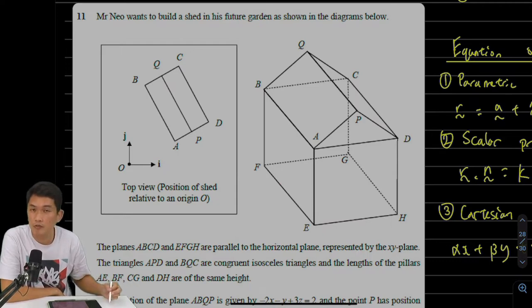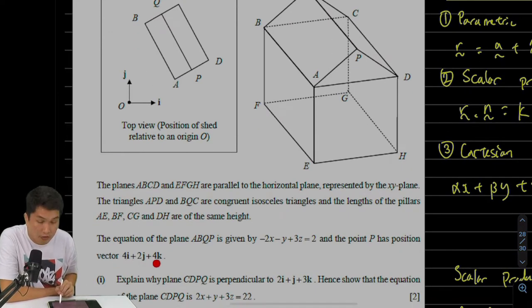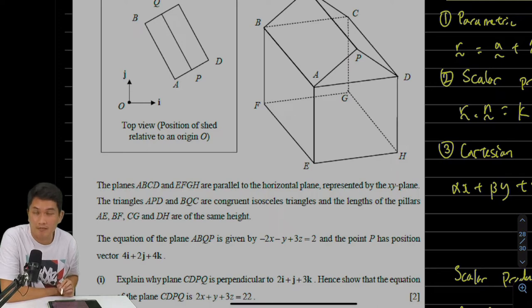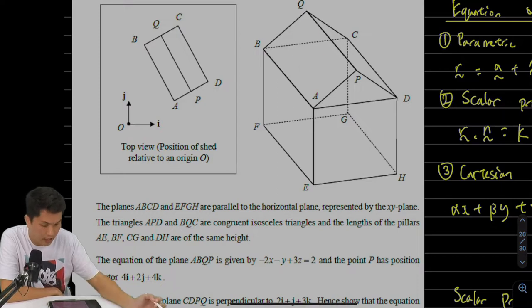The question gives you two pieces of information. Number one, the position of point P is given to be 4i plus 2j plus 4k, which means I can write it as coordinates (4, 2, 4). Next, they've also given you the equation of this plane, the left slanted face of the shed.